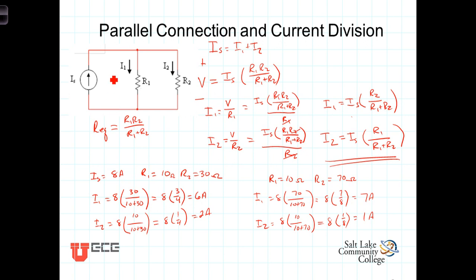So under these circumstances, with I1 at 10 ohms and I2 at 70 ohms, 7 eighths of the current, or 7 amps, comes through I1, and 1 amp goes through R2.